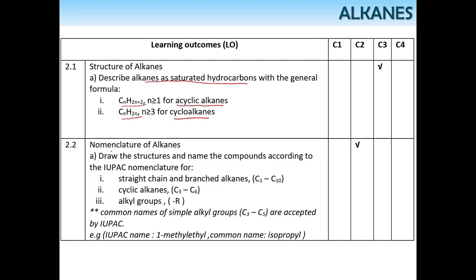Also 2.2, nomenclature. You should be able to name the alkane, draw the structure and name the compound according to the correct IUPAC nomenclature for straight chain and branched alkane, cyclic alkane, and alkyl groups such as ethyl, methyl, propyl, and so on.